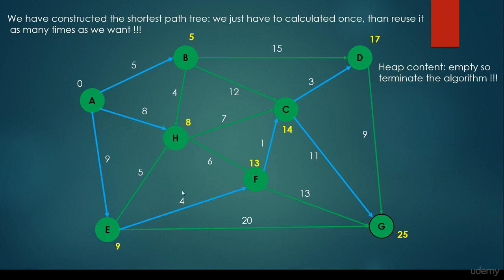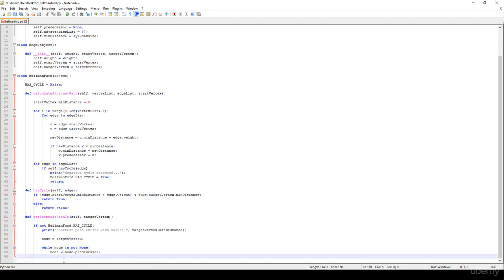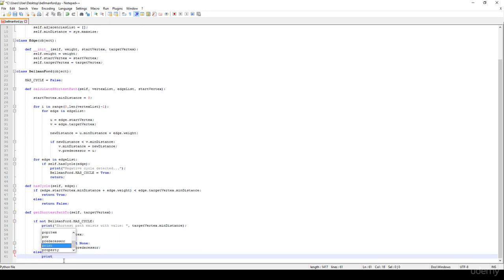We have calculated the so-called shortest path tree. If we would like to get the shortest path for vertex G, we just get the minimum distance — say 25 — and backtrack with the help of the predecessors: predecessor of G is C, predecessor of C is F, predecessor of F is E, then A, and the predecessor of A is null. That's why we iterate until we reach a None or null. Otherwise, in the else branch, we just print 'negative cycle detected'.